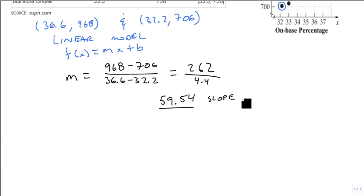Well, to finish the problem, we need to use our point-slope form. So we're going to get y minus a y value, 706, equals m times x minus 32.2. And we could use either point. I'm just choosing the smaller one.